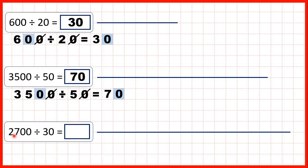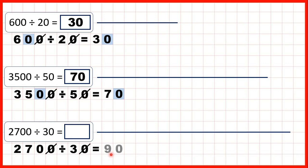Now let's try 2,700 divided by 30. We only have one end zero in the divisor, so we can only cancel one end zero. That means we have 270 divided by 3, which gives us 90, because 27 divided by 3 is 9, and with one end zero in the dividend, we need an end zero in the answer, so that's 90.